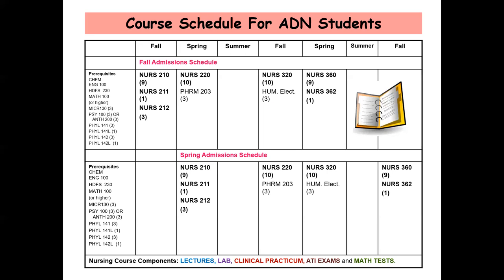Except for the lecture-based nursing courses, each nursing course consists of five components: lectures, lab, wherein the student practices their skills, the clinical practicum, wherein students work with residents or patients in long-term care and acute facilities, ATI exams, and math tests. The ATI exam is an assessment of the student's knowledge and skills for that particular course and provides good preparation for the NCLEX RN licensure exam.